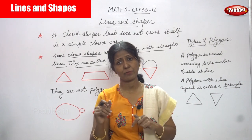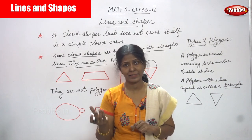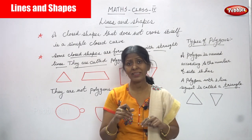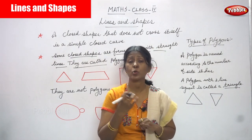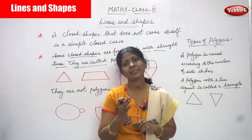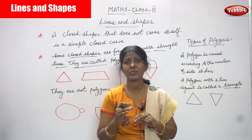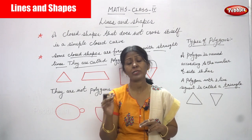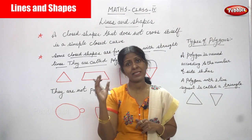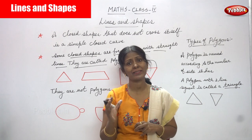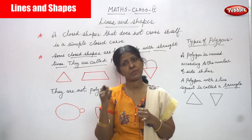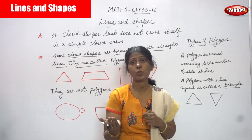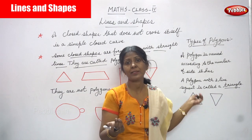A quadrilateral has four straight lines. Examples of quadrilaterals include square and rectangle. A rectangle has four sides with two lengths and two breadths. A square has all four sides equal. Rectangle is a special quadrilateral, and square is also a special quadrilateral.